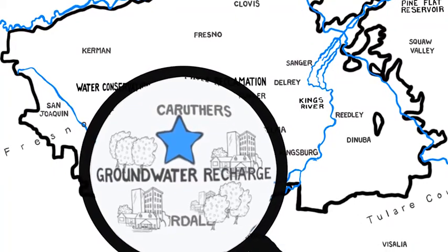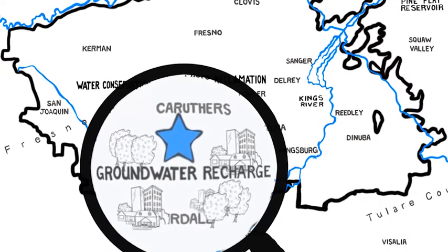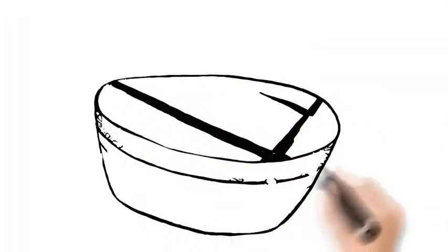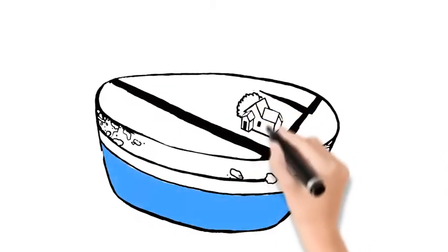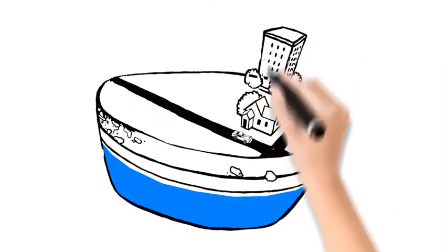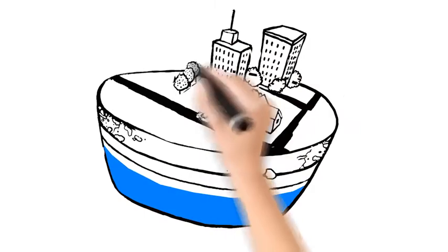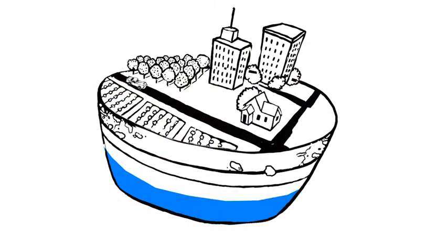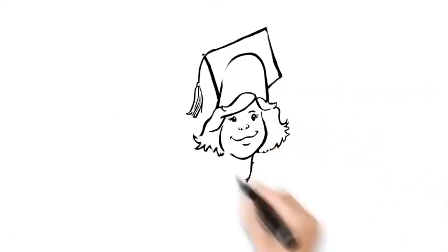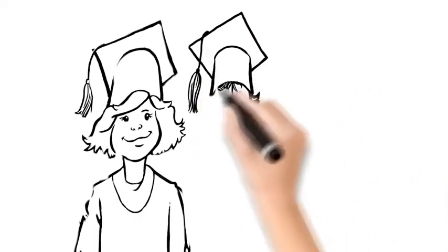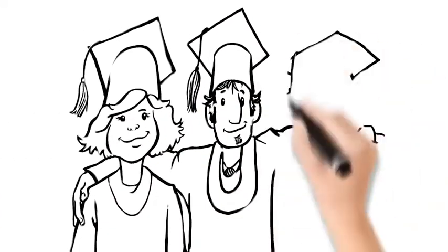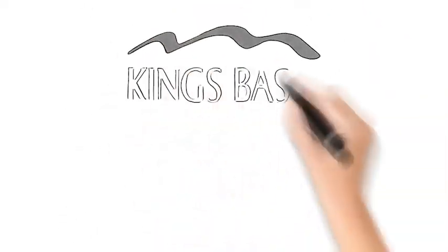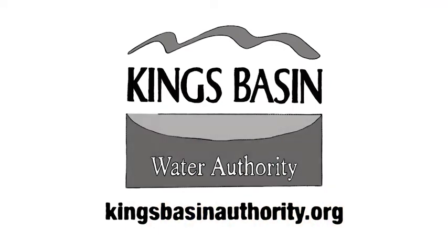Land use is one of the greatest human-caused factors that influences the groundwater system. The Kings Basin has experienced significant changes in land use over the last several decades, and land use decisions that do not consider groundwater impacts are detrimental to the sustainability of the groundwater supply. So, educate yourself and learn as much as you can so we can make good, informed decisions when growing our cities and our food. Visit kingsbasinauthority.org for more information.